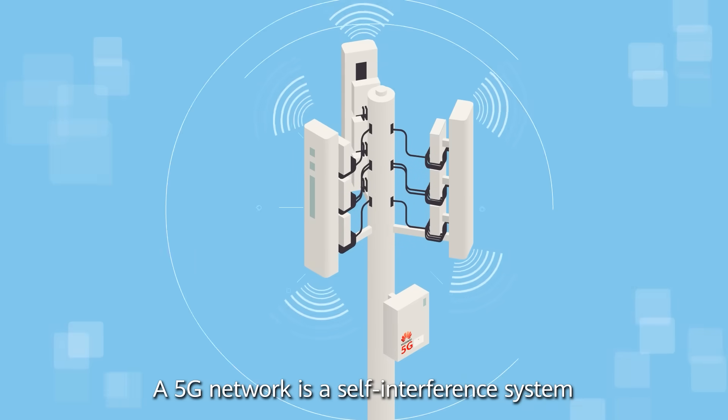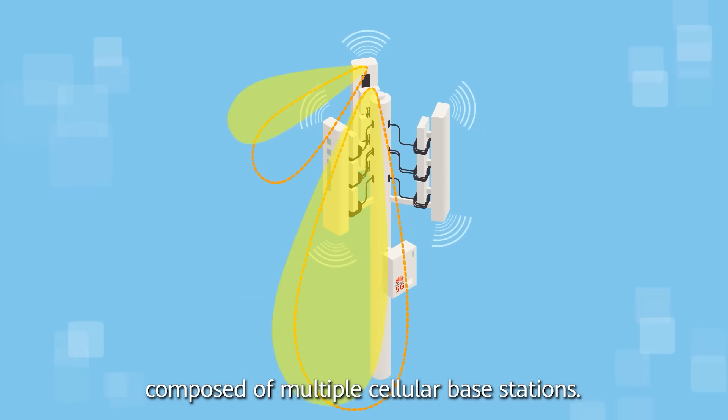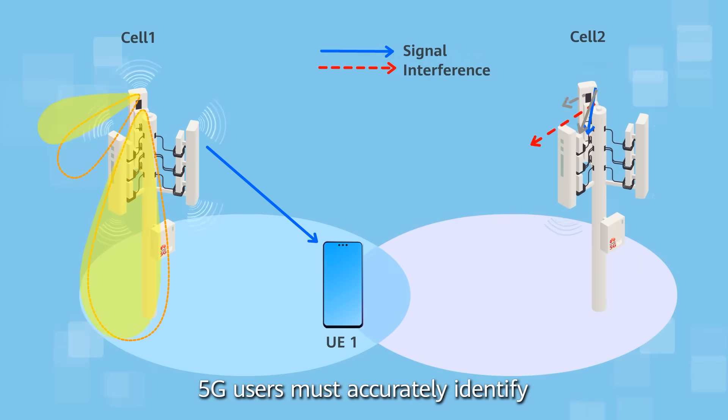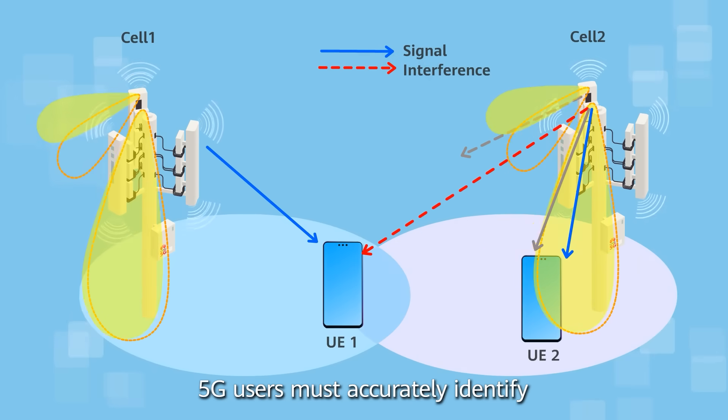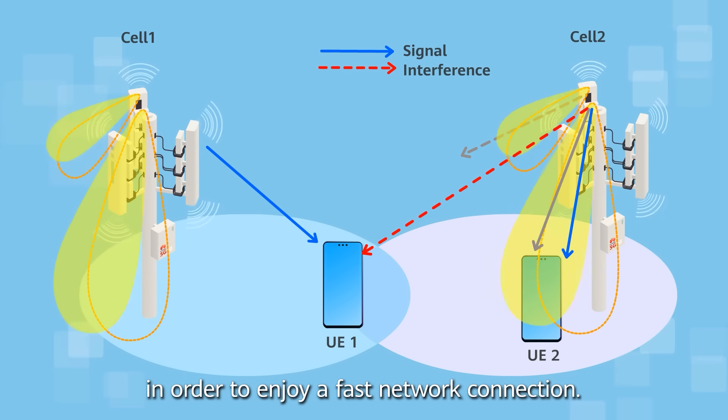A 5G network is a self-interference system composed of multiple cellular base stations. 5G users must accurately identify where the signal they receive comes from in order to enjoy a fast network connection.